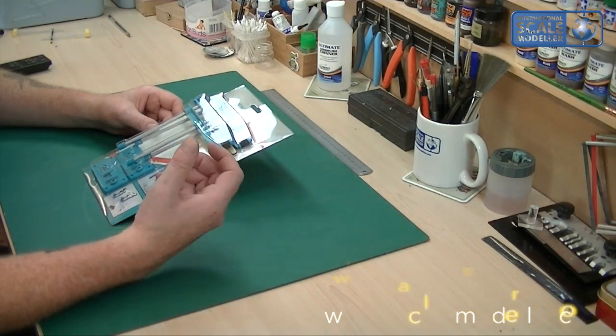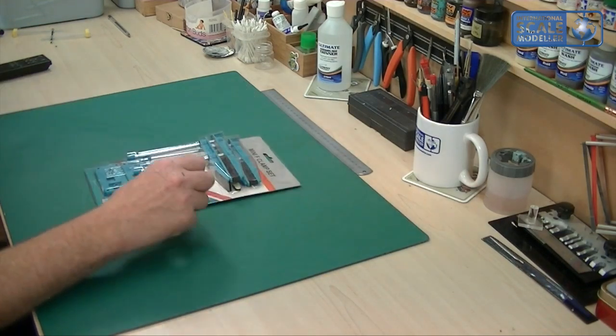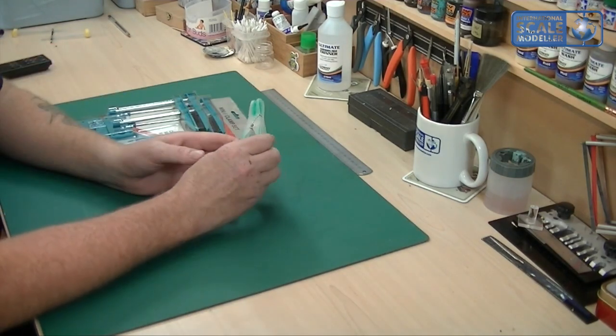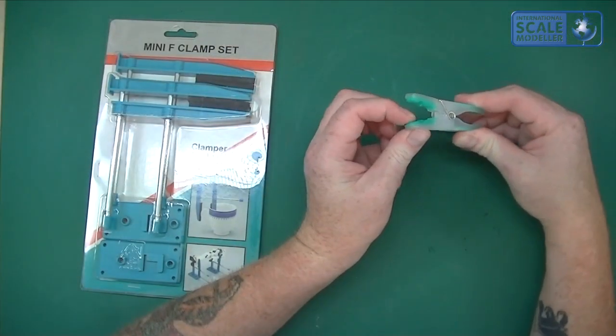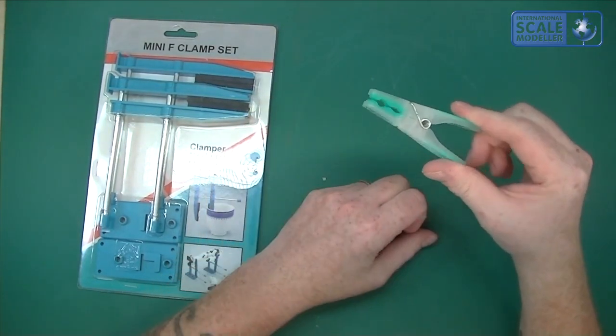You know, pegs are okay for wings and things like that. I use these plastic tips which you can get from Wilkinson's for a pound, and these are rubber tipped on here so they're soft on the models, they're not hard and they don't slip off as well, so they're very good.